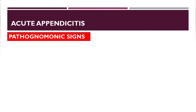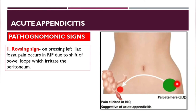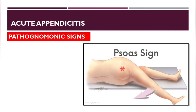Pathognomonic signs of acute appendicitis: pressing on the left iliac fossa produces pain in the right iliac fossa due to a shift of bowel loops that irritates the peritoneum — this is Rovsing's sign.